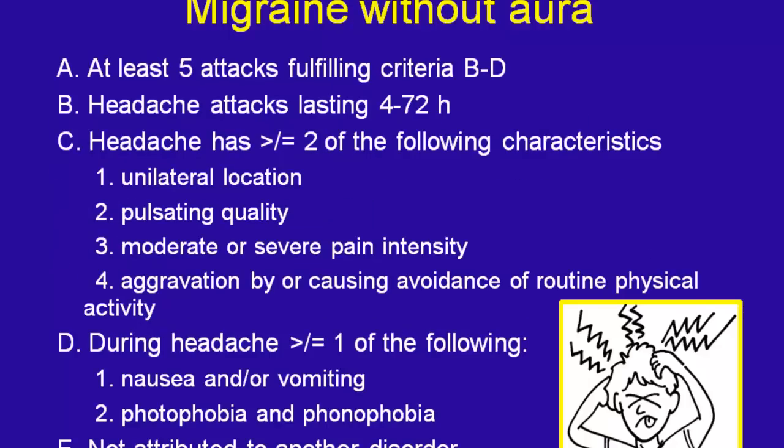Migraine headaches last between four and 72 hours — in kids they can be shorter, but in adults they tend to be four hours or more. They are usually unilateral, but the important thing is they must flip sides at least once. They're pulsating, moderate or severe — mild headaches are not migraines. They're usually aggravated by activity: if it hurts worse when running or climbing stairs and you feel every step, those are usually migraine patients.